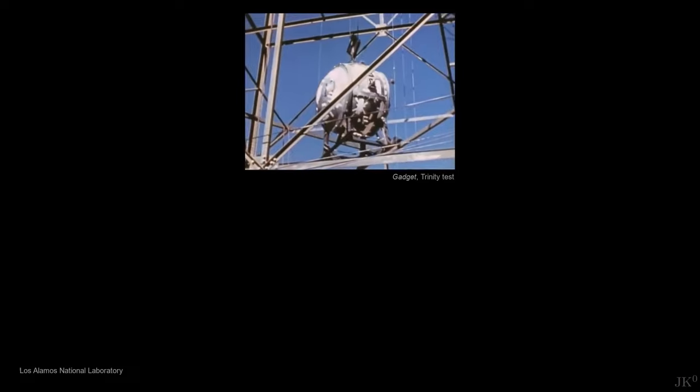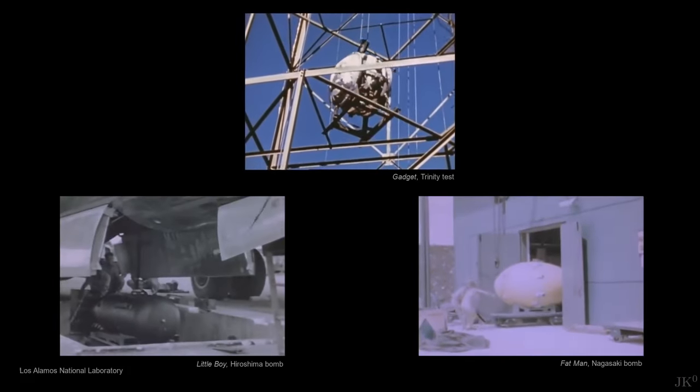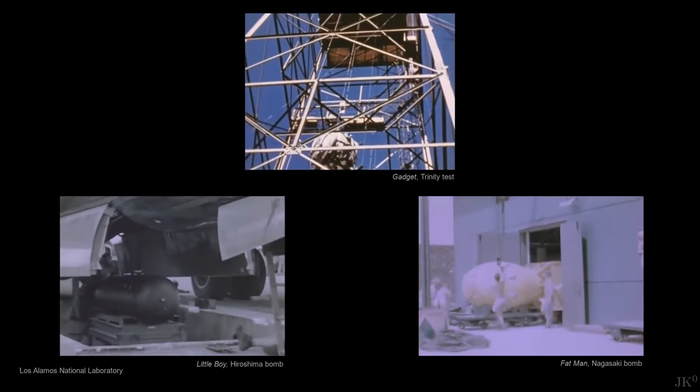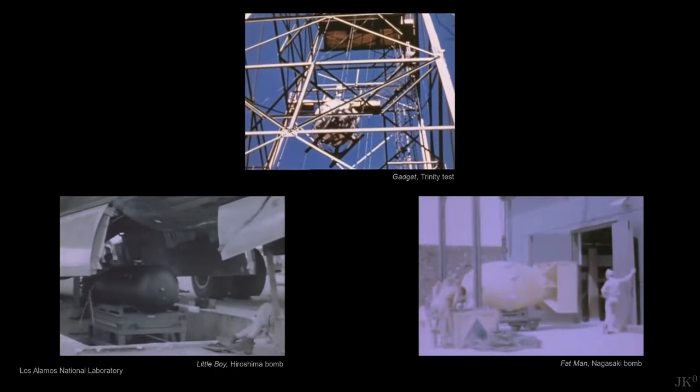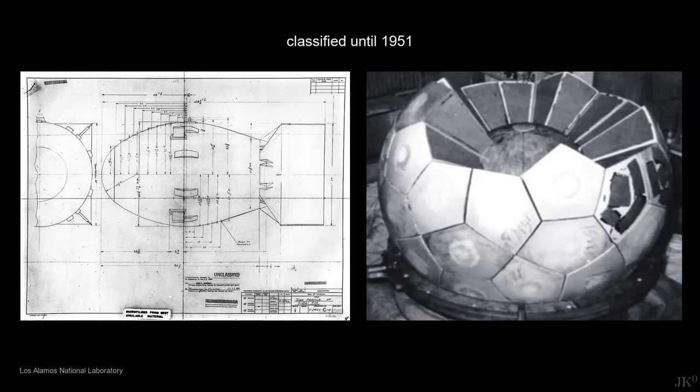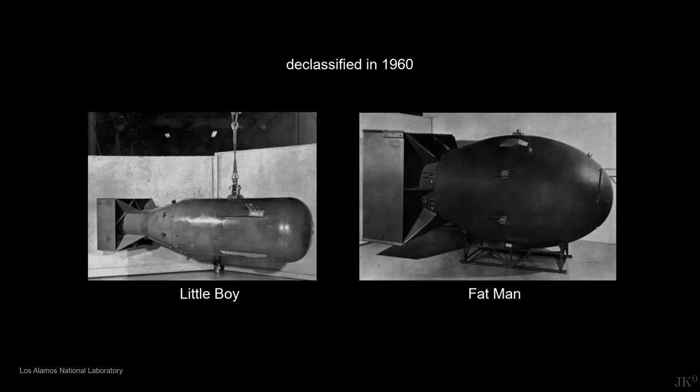One could argue that the Trinity and Nagasaki bombs were different from the bomb dropped over Hiroshima. However, the public didn't know these details. They only knew that the nuclear cores were different, one made of uranium and the other made of plutonium. The implosion design was classified until 1951, and the first pictures of how the two bombs used in combat looked were declassified only in 1960.